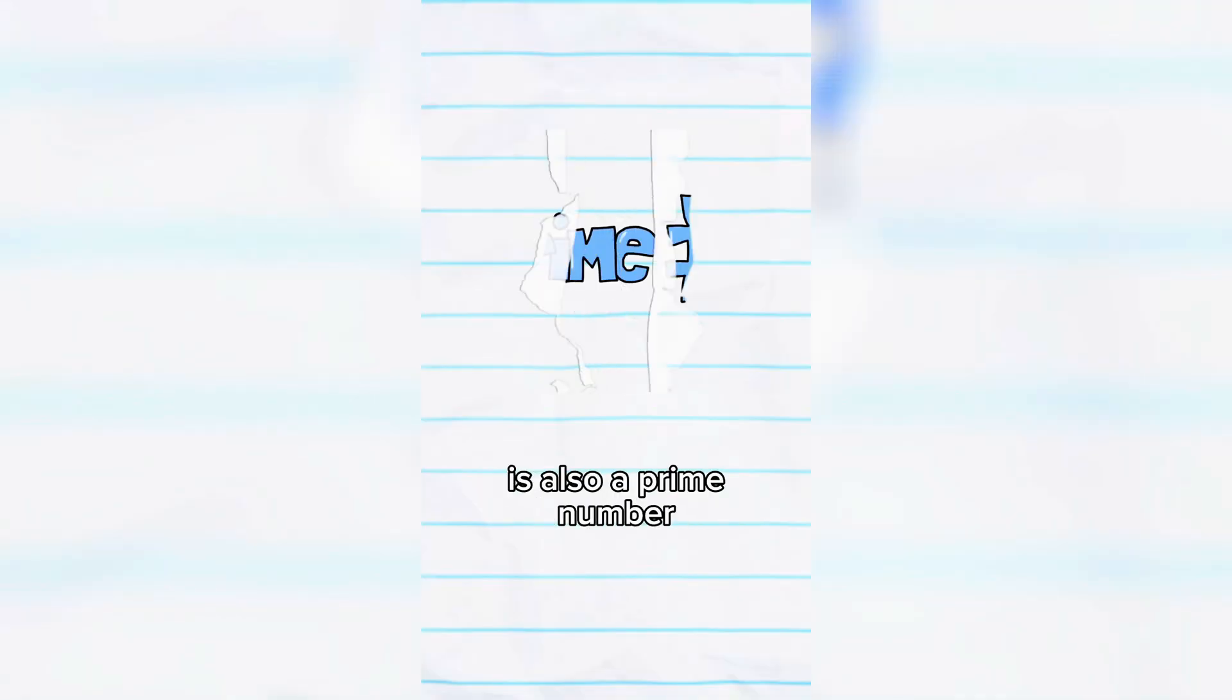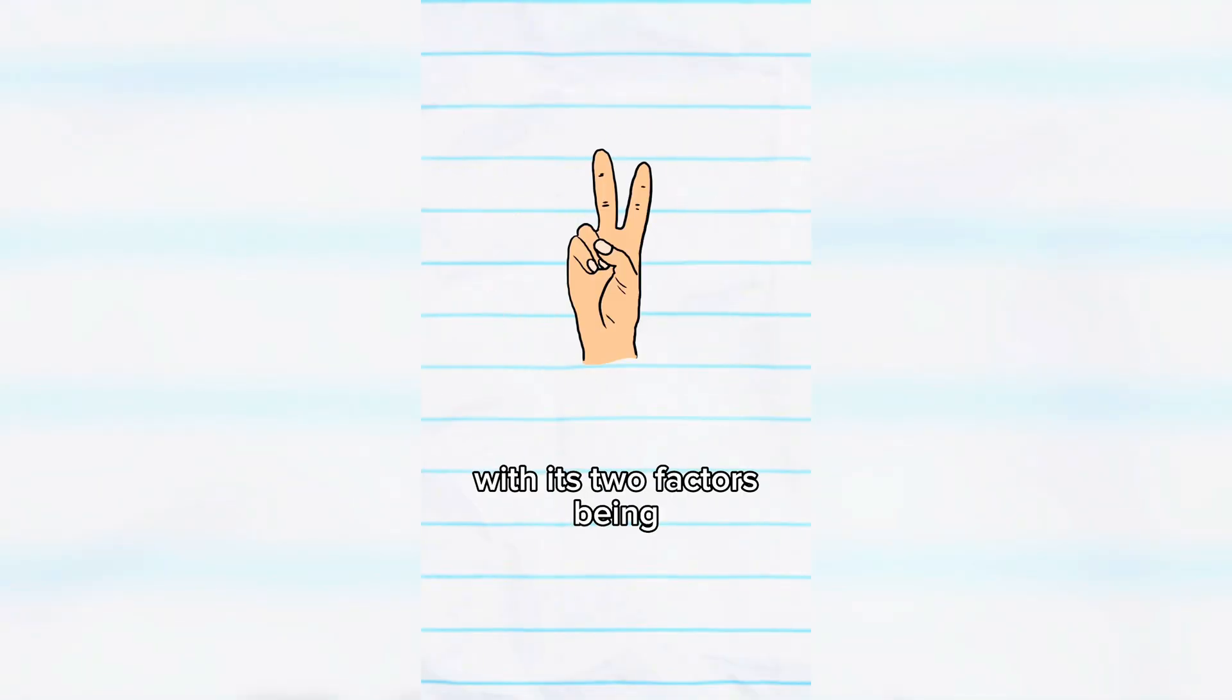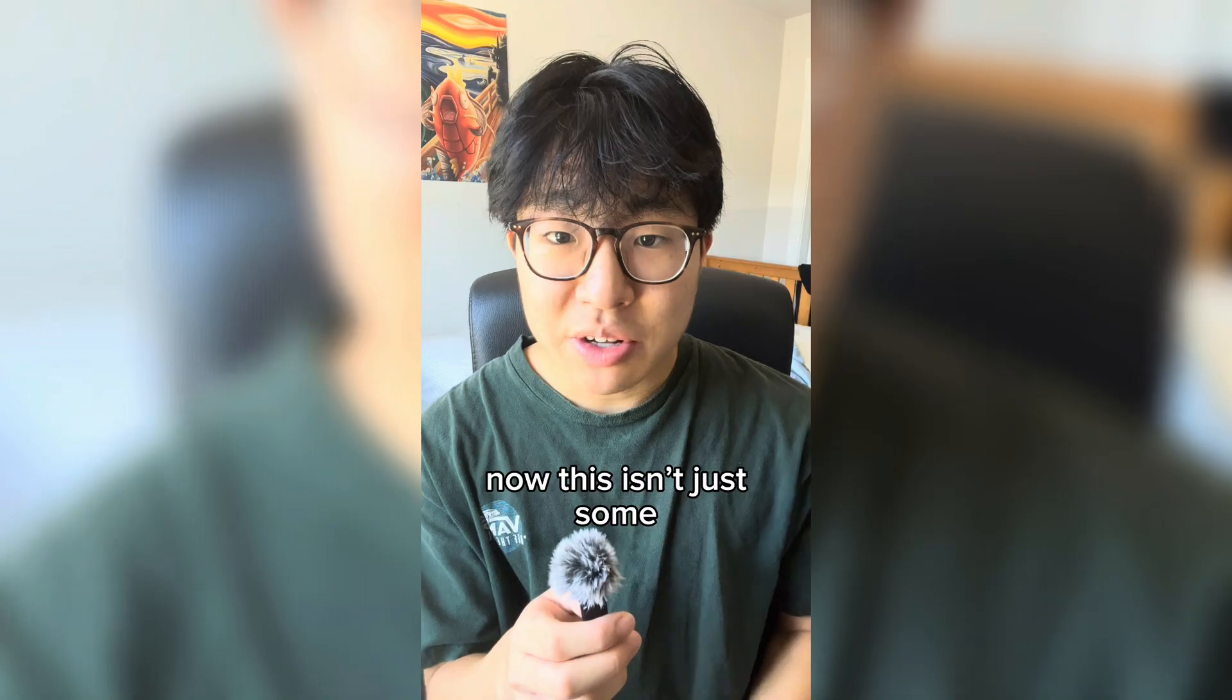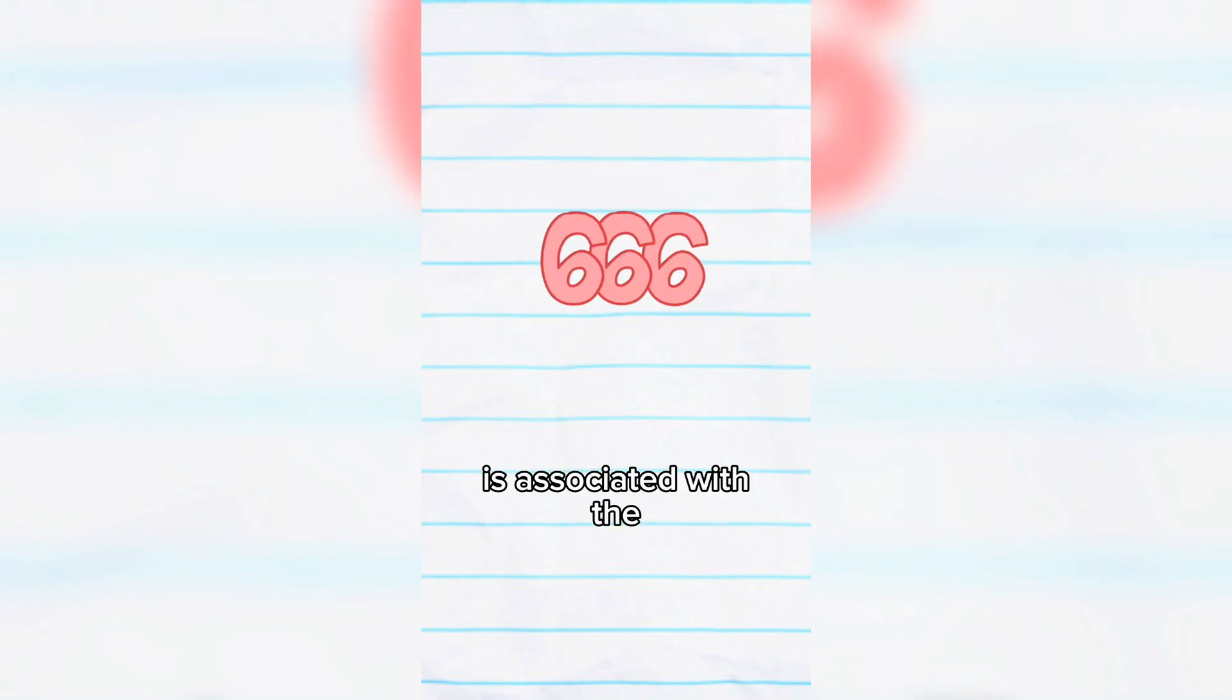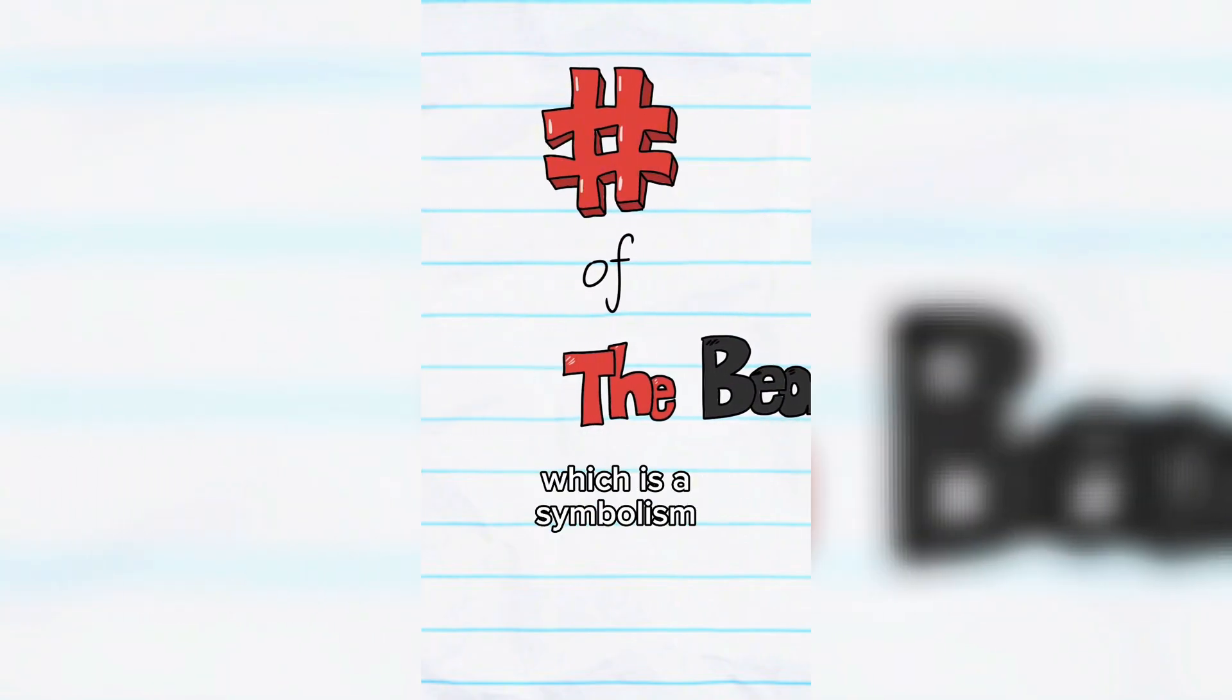But this really massive number is also a prime number with its two factors being just one and itself. Now, this isn't just some random prime number, it's called the Belphegor's prime number. And the 666 in the middle of the number is associated with the number of the beast, which is a symbolism of the devil.